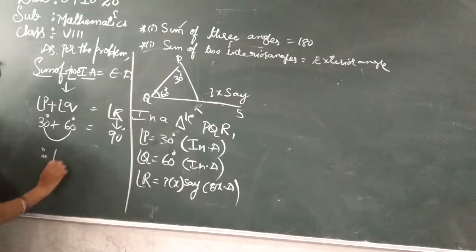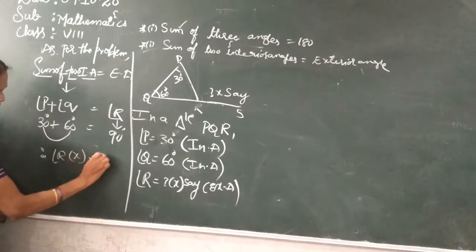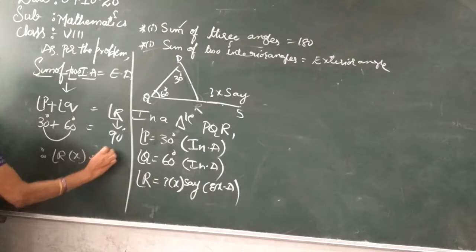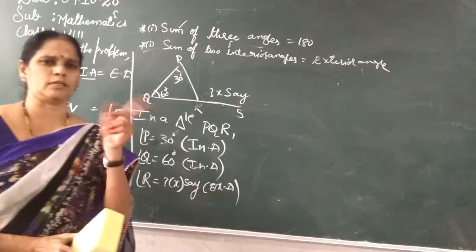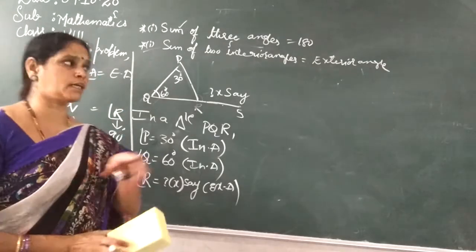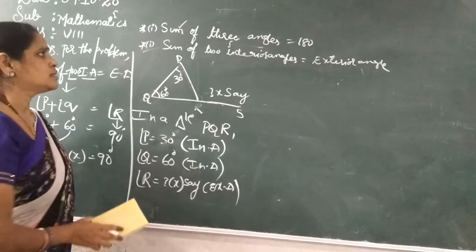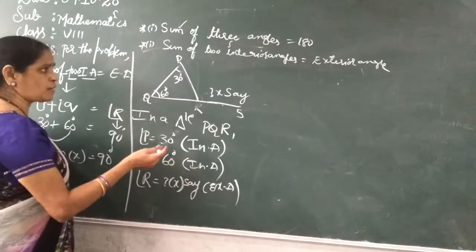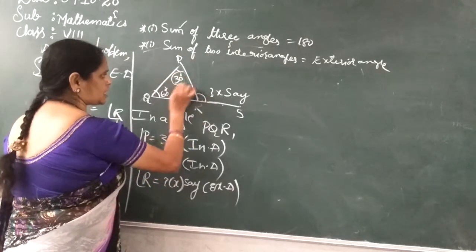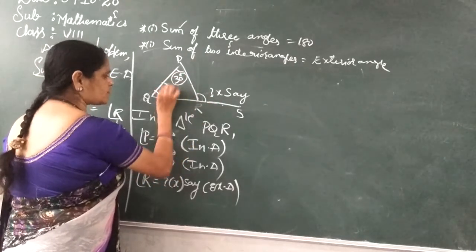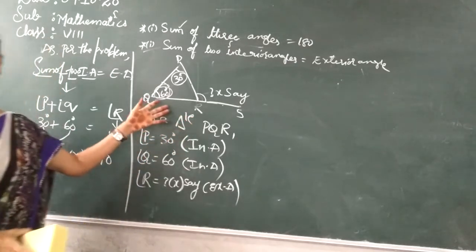Therefore angle R, X, is equal to 90 degrees. Suppose you are given two interior angles but not the exterior angle, you have to use this property. And next, suppose you are given one interior and the exterior, then in the same way you have to solve.